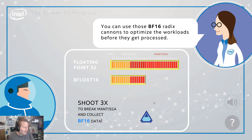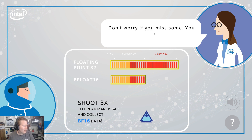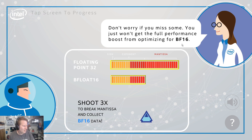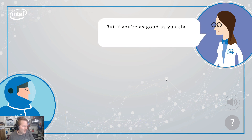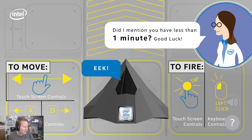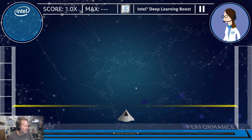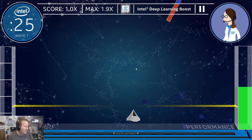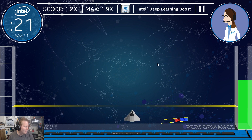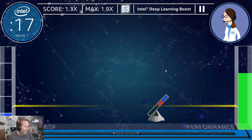This script is weird. This is definitely a script from marketing. 'Don't worry if you miss some, you just won't get the full performance boost from optimising for BF-16. But if you're as good as you claim to be, you won't give up that extra performance boost. Did I mention that you have less than 1 minute? Good luck!' Okay, so A and D and left click, with a little Intel Xeon Scalable inside my stealth fighter. You can definitely tell this game is built to a small budget. One down — my workload on the left is going up, I guess.